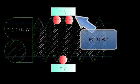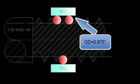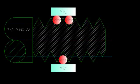895 thou is slightly larger than the outside diameter of this thread, which is 875 thou. So we can clearly measure over the outside of these wires to get the measurement.